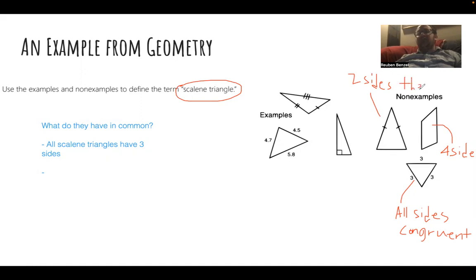So if the non-examples have two or three sides the same, then the examples might need to be like all sides are different. And that's what we may notice here. So I may also take note of that and say that all sides are different.